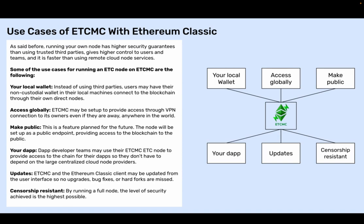Use cases of ETCMC with Ethereum Classic. Running your own node has higher security guarantees than using trusted third parties, gives higher control to users and teams, and is faster than using remote cloud node services. Some use cases for running an ETC node on ETCMC include: your local wallet — instead of using third parties, users may have their non-custodial wallet on their local machines connect to the blockchain through their own direct nodes.